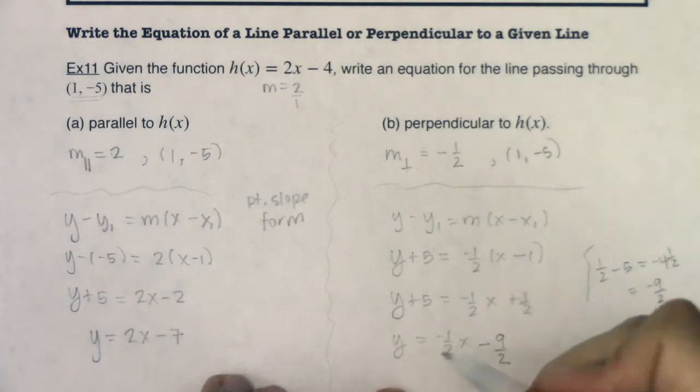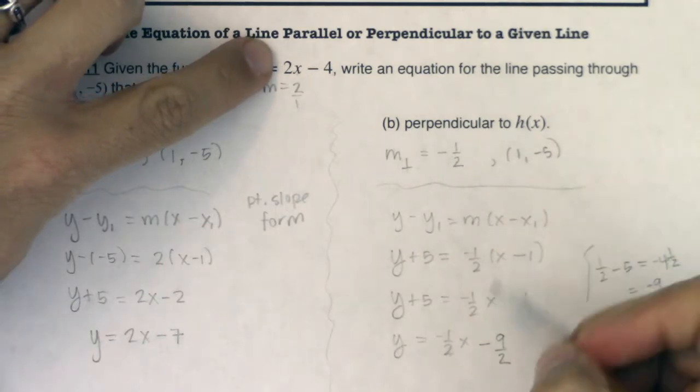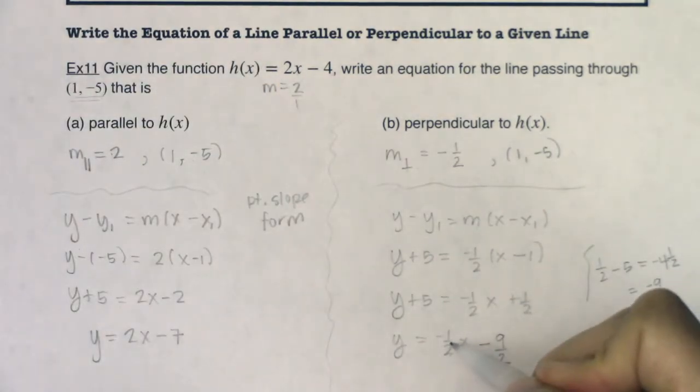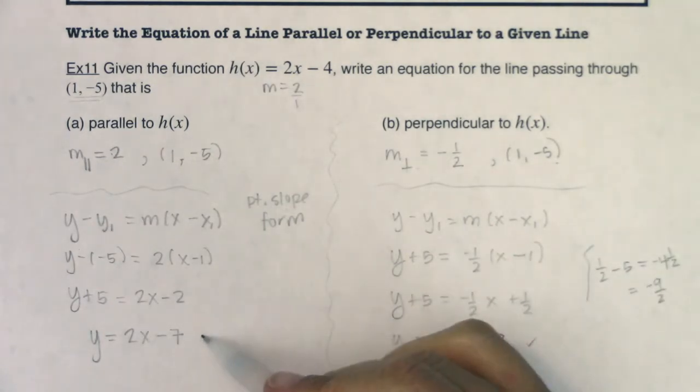Okay. Now, if I look, these slopes are negative reciprocals of each other. All right. Let's see if (1, -5) works out. If I plug 1 in for x, negative 1 half times 1 is negative 1 half. Negative 1 half minus 9 halves is negative 10 halves. And negative 10 halves is equivalent to negative 5. So both of these are working out.